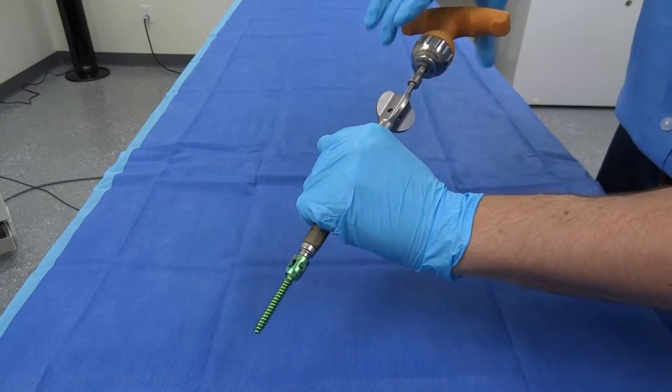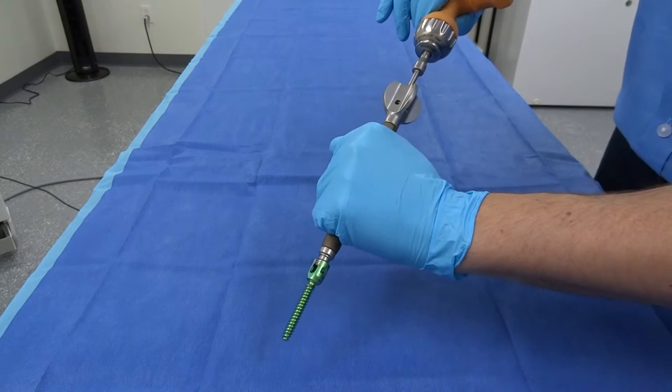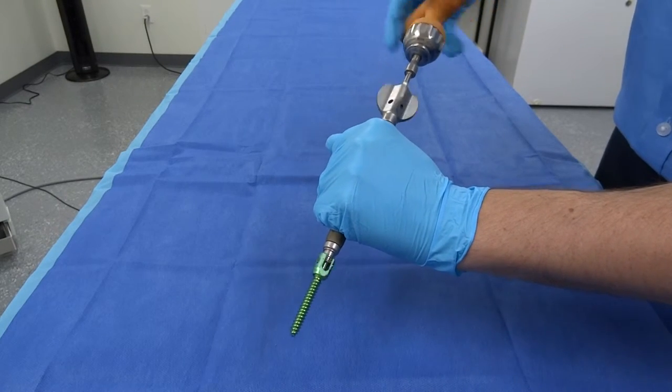You can then put the handle back into forward ratcheting and hand off to the surgeon for screw insertion.